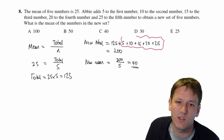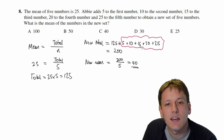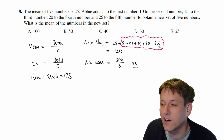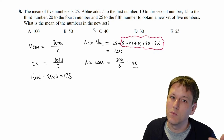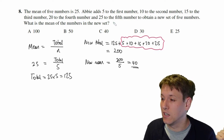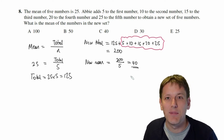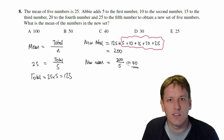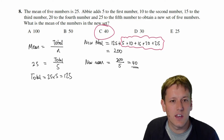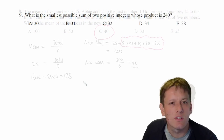An even faster method: add together just the amounts added on — 5 plus 10 plus 15 plus 20 plus 25 equals 75 — divide by 5 to get 15, and say the new mean is 25 plus 15 equals 40. Either way, the answer is C: 40.